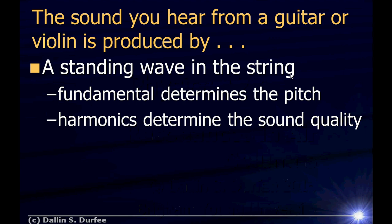To review, last time we determined that the frequencies you hear from a guitar or violin depend on the string. You generate a standing wave in the string, and there are different frequencies of standing waves you can make. The fundamental, or first harmonic, determines the pitch — that's middle C or an A above middle C. The other harmonics determine the quality, or tone, of the sound. That's what makes a violin sound different from a guitar, which sounds different from a piano or a trumpet, which we're going to talk about today.